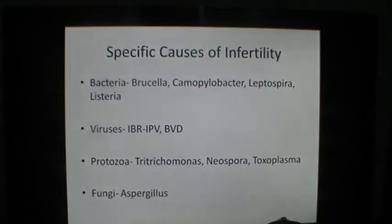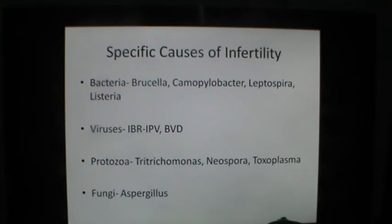The specific causes of infertility include bacteria, viruses, protozoa and fungi. Bacteria may include Brucella, Campylobacter, Leptospira, Listeria, and viruses usually include IBR and BVD. The protozoal causes of infertility and abortion in dairy cattle include Tritrichomonas fetus, Neospora caninum and Toxoplasma. Fungi such as Aspergillus could be a cause of abortion in dairy cows.